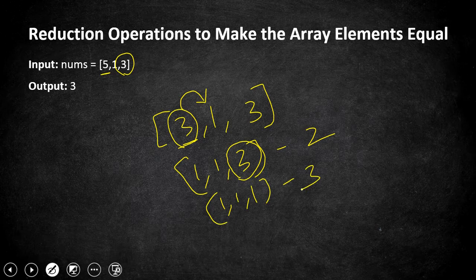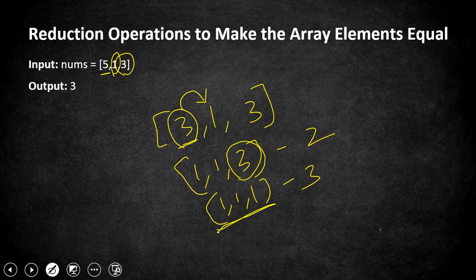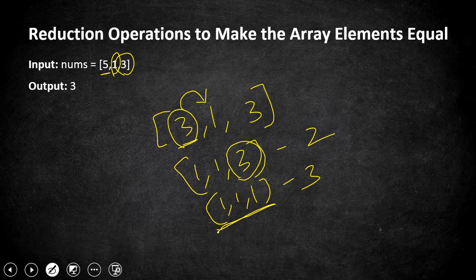How are we going to approach this? Two things to note: first, the smallest element is what all others will ultimately be replaced with. Second, the problem statement says if there are more than two equal elements, pick the one at the smallest index — but that actually has nothing to do with the solution. We can solve this without considering that statement.